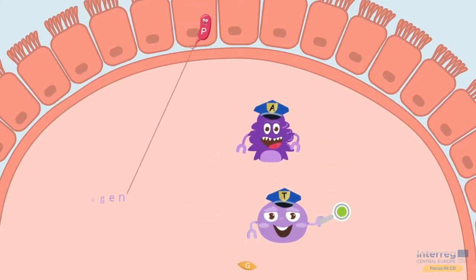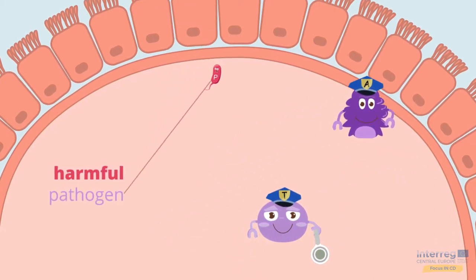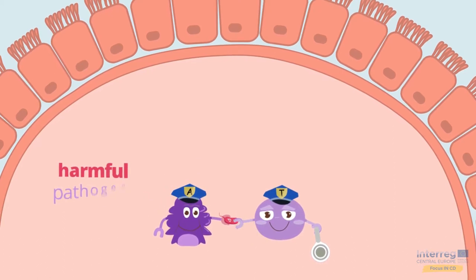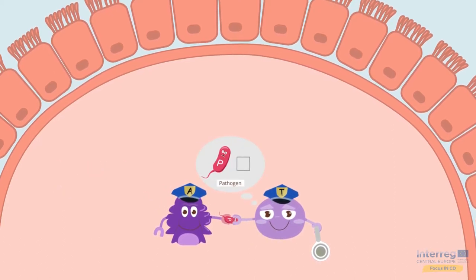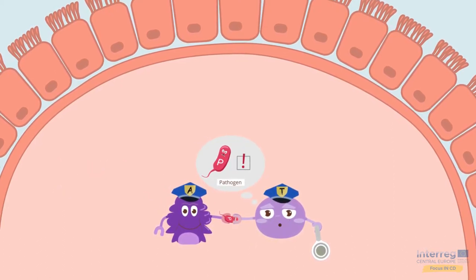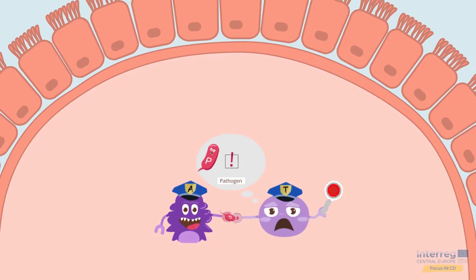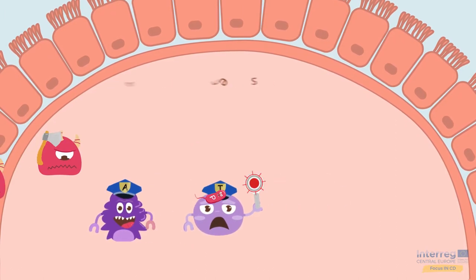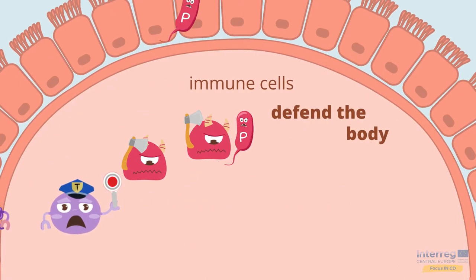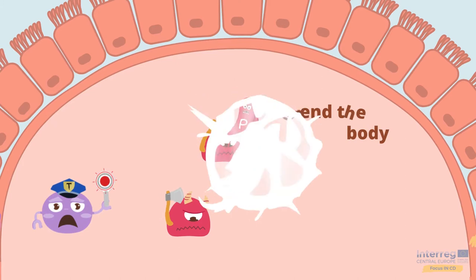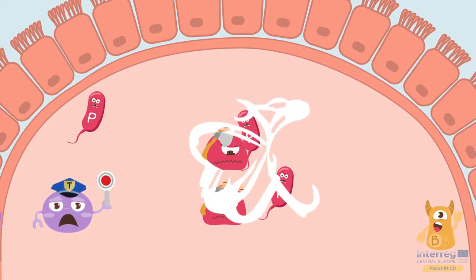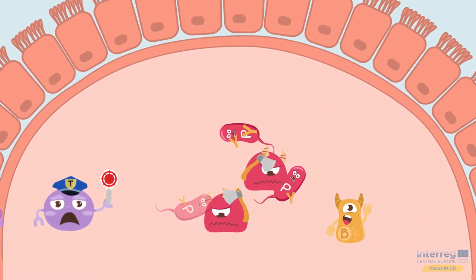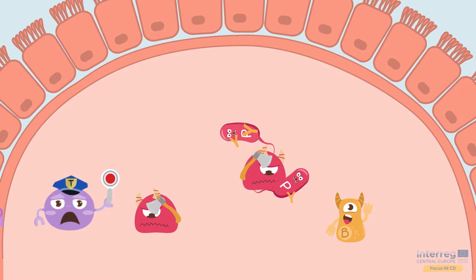But if a harmful pathogen invades a person's body, the T-helper cell recognises the invader and calls other immune cells to defend the body against this pathogen. After all pathogens have been cleared, the immune reaction is stopped.